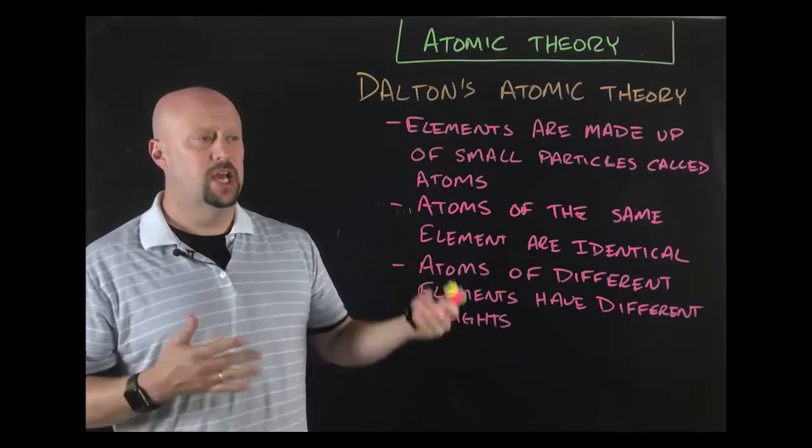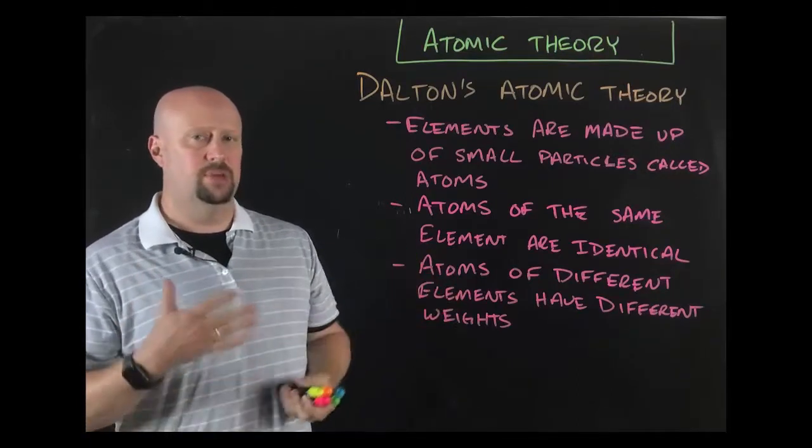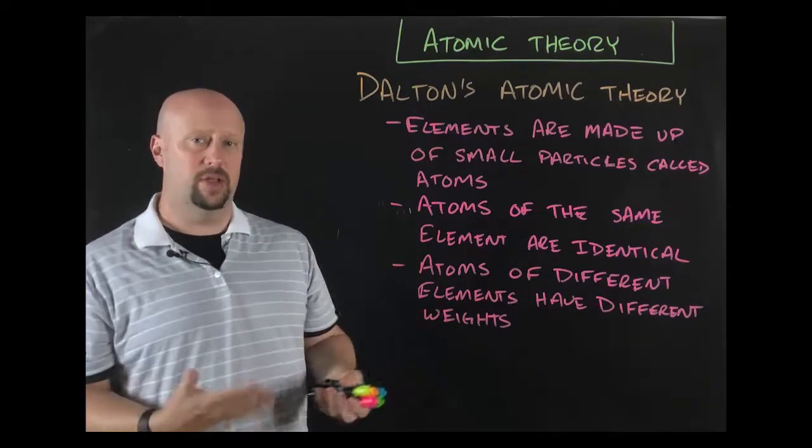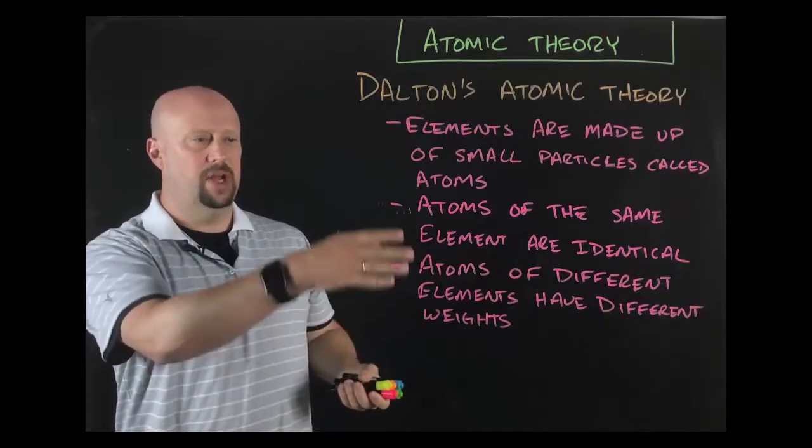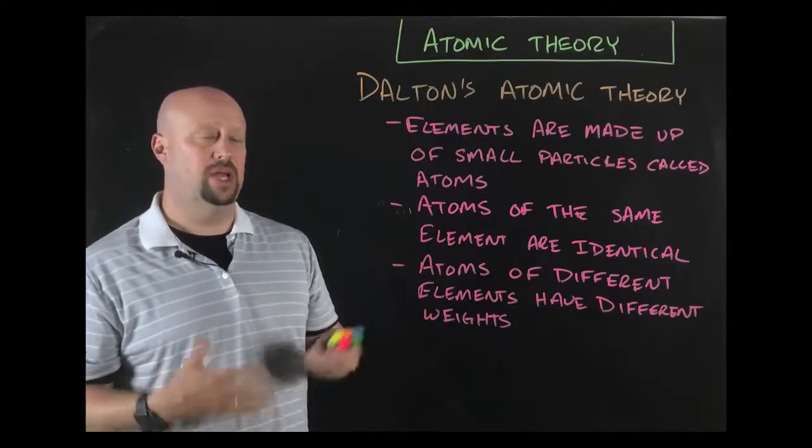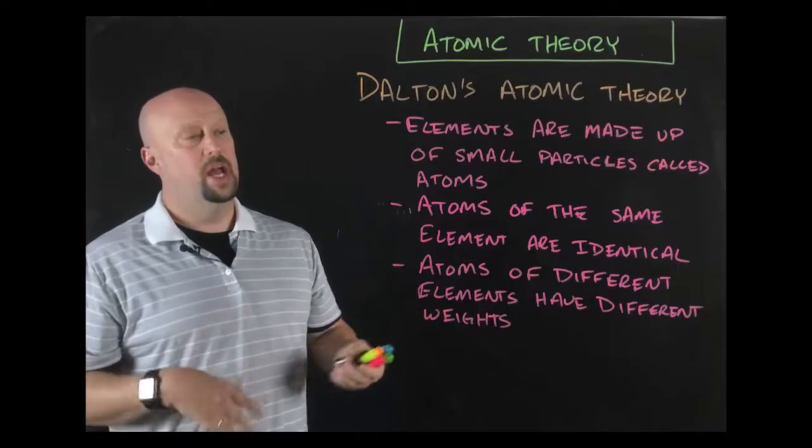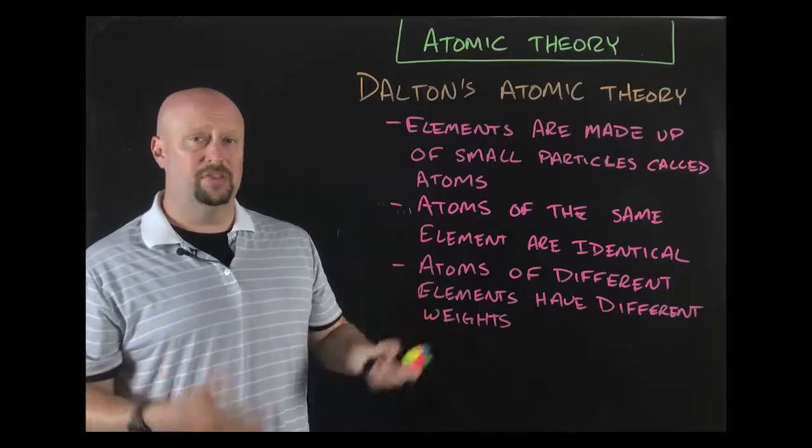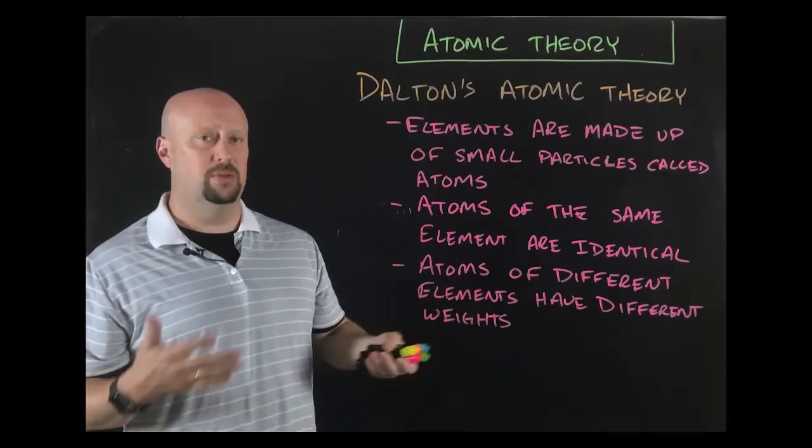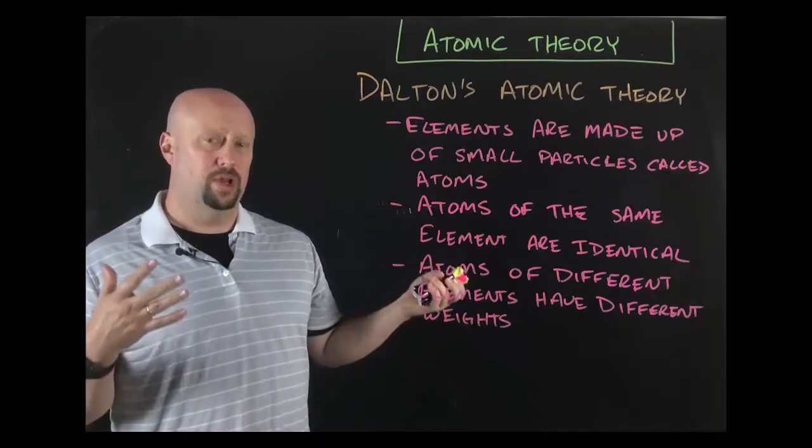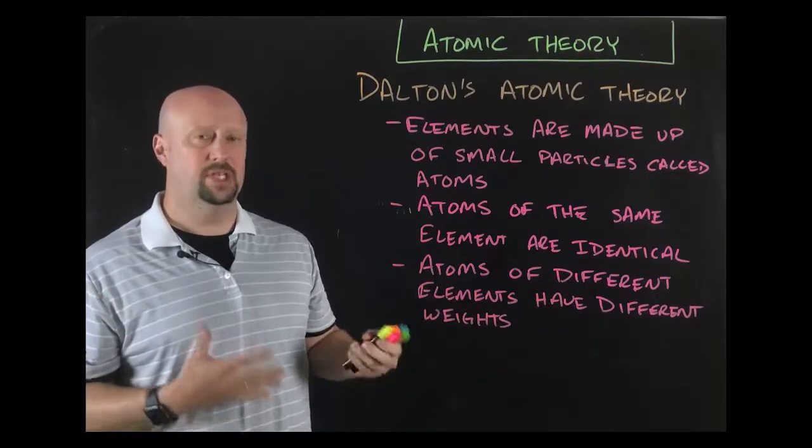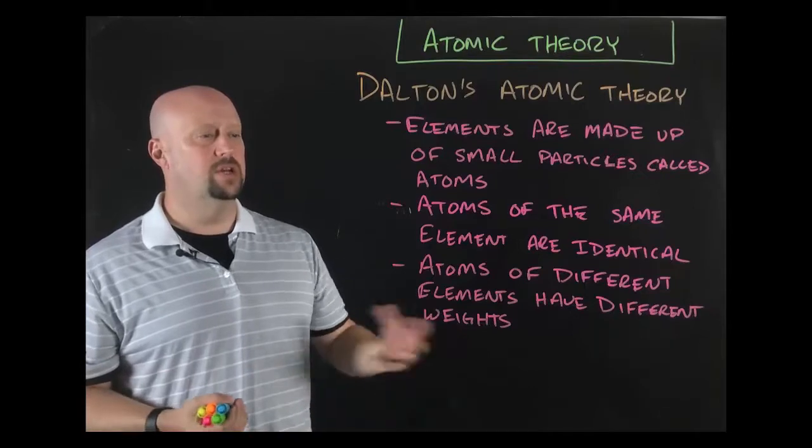Dalton's contention was that one way you could tell elements apart is that at the atomic level, each atom would have a different weight if it belonged to a different element. That is somewhat similar to what we have today. If you look on the periodic table, most elements have different weights. That's one of the original ways the periodic table got put together, by using those different weights.